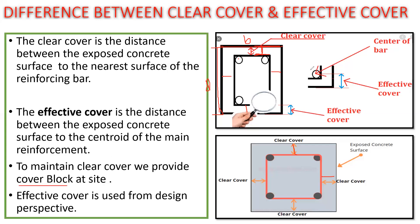Now, what is effective cover? Effective cover is also from the outer face, but this time it goes to the centroid of the reinforcement. The centroid is exactly at the center of the bar. The distance between the outer face and the centroid of the reinforcement — that is the effective cover. You can see here: the center of the reinforcement is marked, and from the exposed surface to that center, whatever distance you have, that is the effective cover.